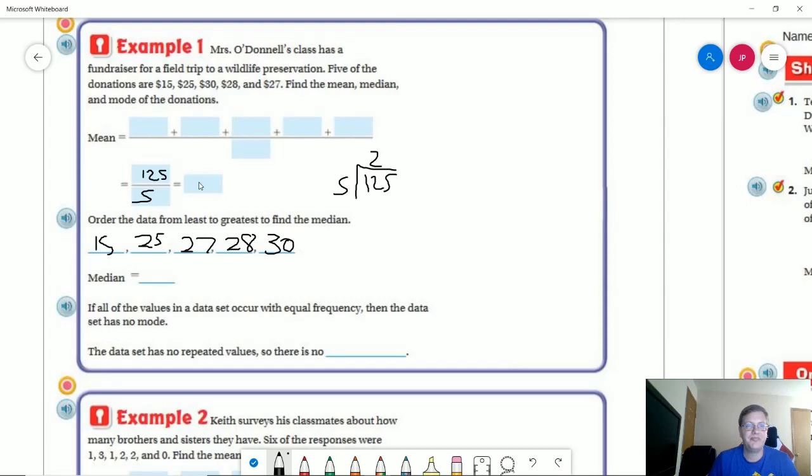Because if there are four quarters in a dollar, a dollar 25 is worth five quarters. So that would give us five times 25. Our median is going to be 27, which is our center number. So are two different things for that. We are not going to have a mode for this one because I do not have a repeated value. So this last part, the data set has no repeated values. So there is no mode.